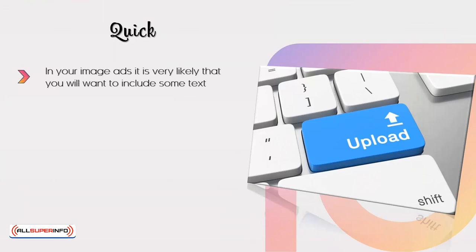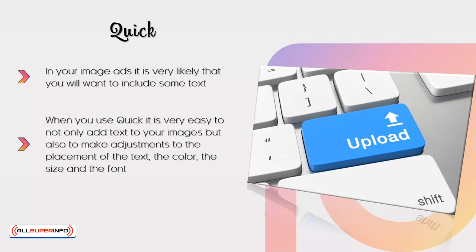Quick. In your image ads, it is very likely that you will want to include some text. This text will be used to persuade the Instagram user to click through your ad. If you are not adept at image editing, then you can do this quickly and easily by using a great little app called Quick. With Quick, it is very easy to not only add text to your images, but also to make adjustments to the placement of the text, the color, the size, and the font. There is a free version of the Quick app that will provide you with the capability to do most image edits, and if you want more features, you can purchase these within the app.